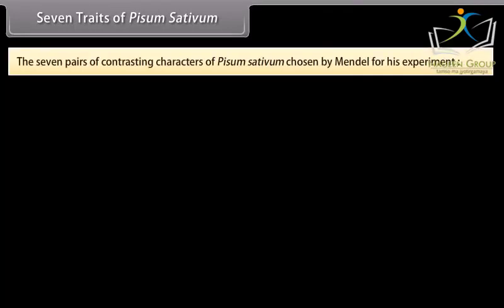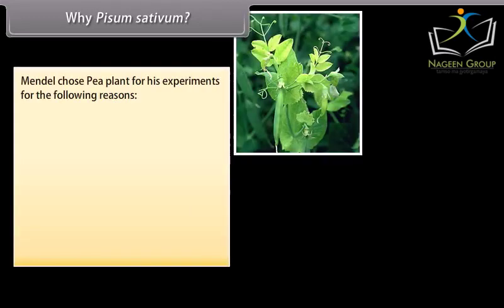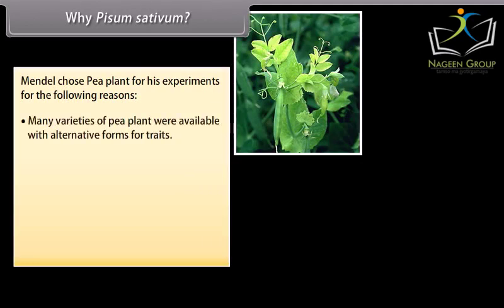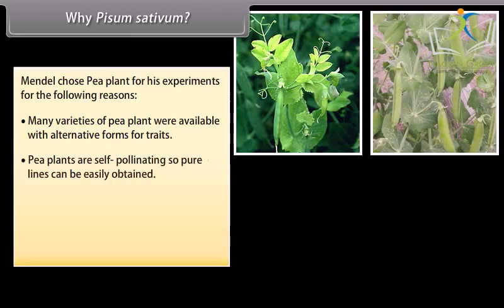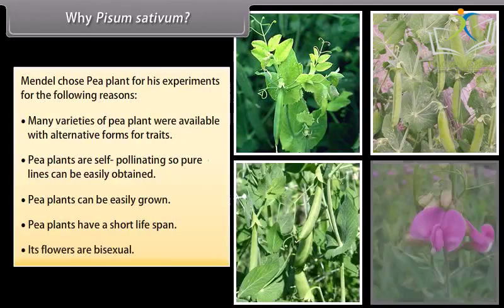Seven traits of Pisum sativum. The seven pairs of contrasting characters of Pisum sativum were chosen by Mendel for his experiment. Mendel chose the pea plant for the following reasons: many varieties were available with alternative forms for traits; pea plants are self-pollinating so pure lines can be easily obtained; pea plants can be easily grown, have a short life span, and their flowers are bisexual.